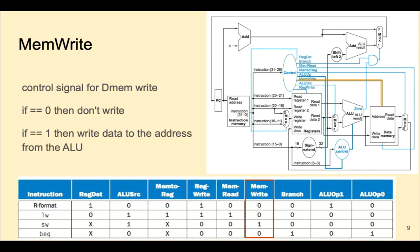Likewise, MemWrite is 1 for store word, and 0 for all other instructions, since they don't have permission to write to data memory. Store word writes the value in RT to the address calculated by the ALU.